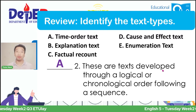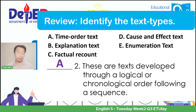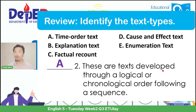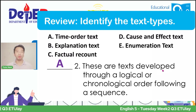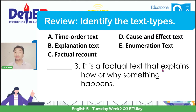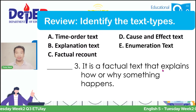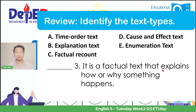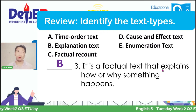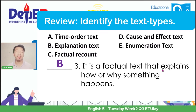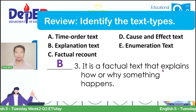As I said last week, this is like when we prepare something we are going to cook—the procedures or steps need to follow a certain pattern or sequence. We move on to question number three: it is a factual text that explains how or why something happens. If your answer is letter B, an explanation text, then you are correct. This kind of explanation text gives information or facts that explain a scenario or an event.